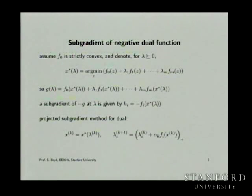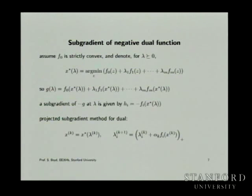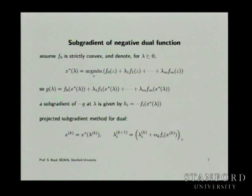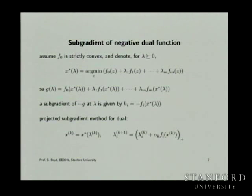Let's work out the subgradient of the negative dual function. We let x star of lambda be the argmin of the Lagrangian. The big sledgehammer assumption here is that f0 is strictly convex.